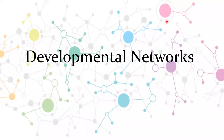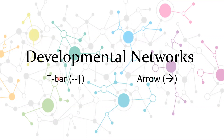Today I'm going to be talking about developmental networks. These are regulatory and signaling genes that lead to developmental processes and the interactions between them. They determine if a gene will be transcribed depending on those interactions. We have the T-bar, which inhibits the next gene from being expressed, and arrows, which activate the expression of the next gene.